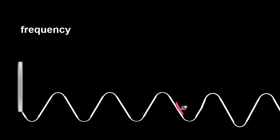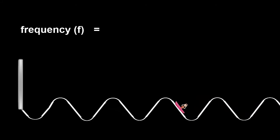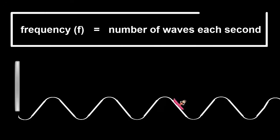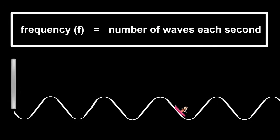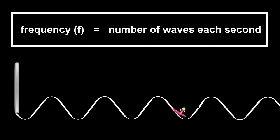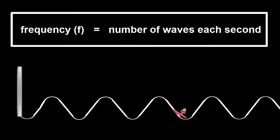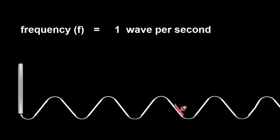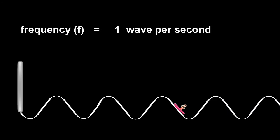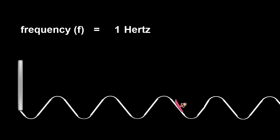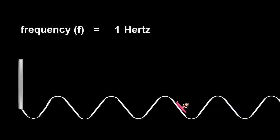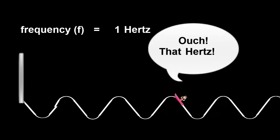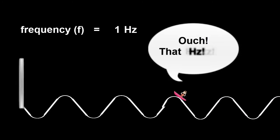The wave's frequency, given the symbol F, is the number of waves being made each second. The frequency is also the number of waves passing by the guy in the boat each second. Here, only one wave is passing per second, so scientists say that its frequency is one hertz. Hertz is the unit of frequency, and it just means waves per second. It's usually shortened to Hz.